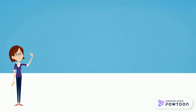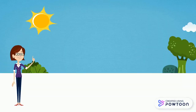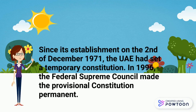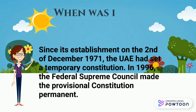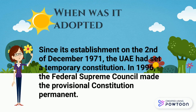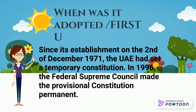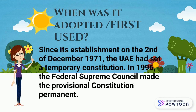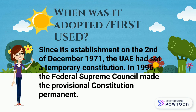Since its establishment on the 2nd of December 1971, the UAE had set a temporary constitution. In 1996, the Federal Supreme Council made the provisional constitution permanent.